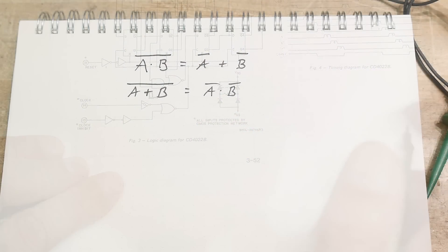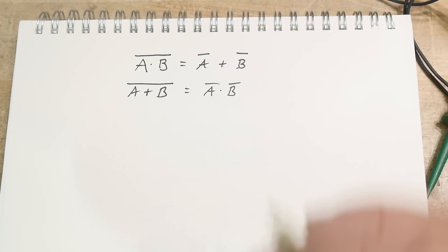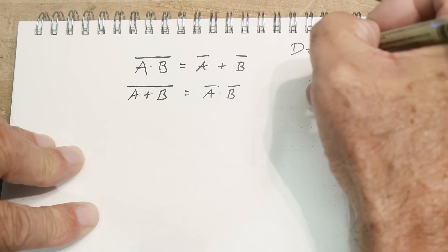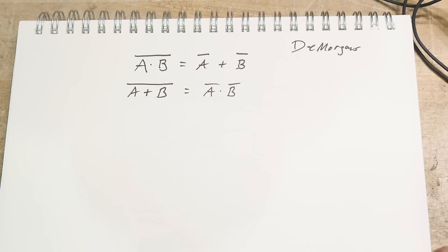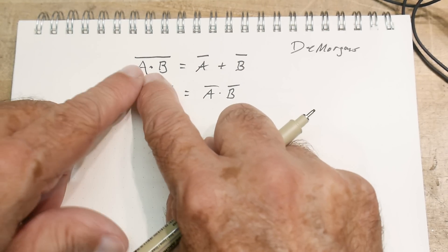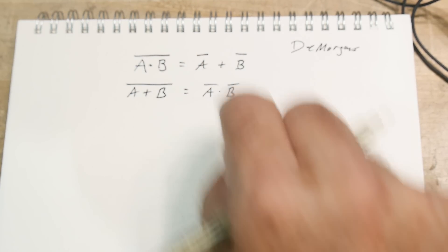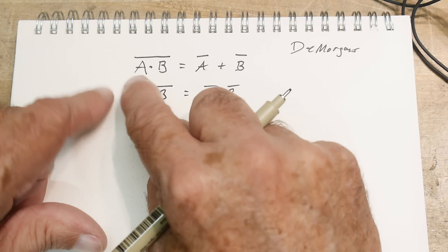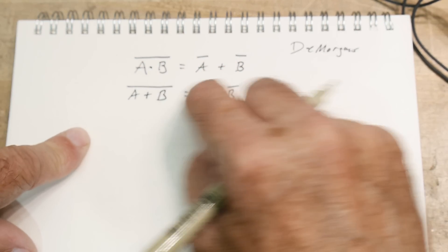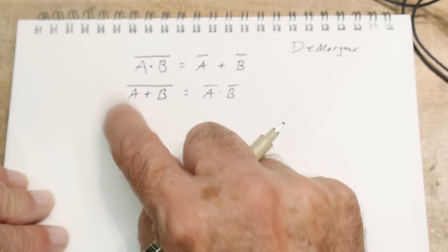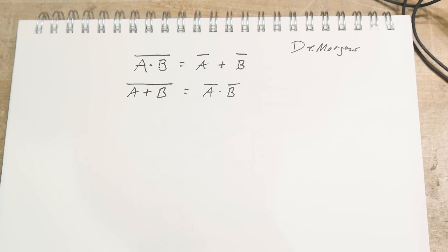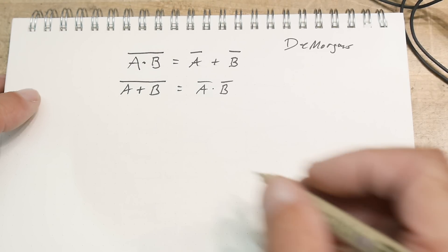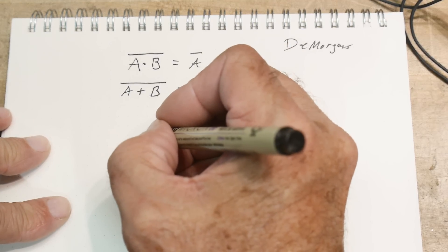This is what's known as De Morgan's theorem. De Morgan says - what is that, I've never seen that before? Little dots mean AND and pluses mean OR. This reads A AND B equals A OR B with lines over them meaning NOT. The inversion.